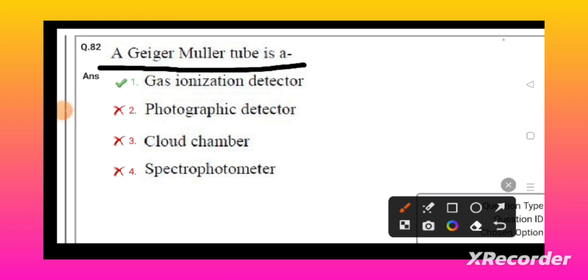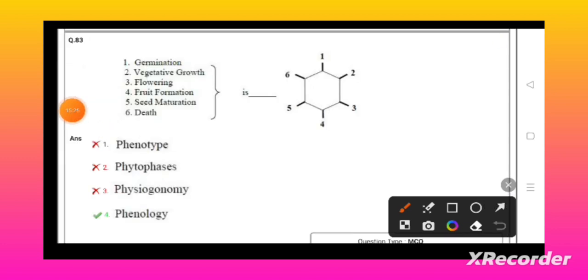Germination, vegetative growth, flowering, fruit formation, seed maturity, death - all this comes under the phenology of the plant.